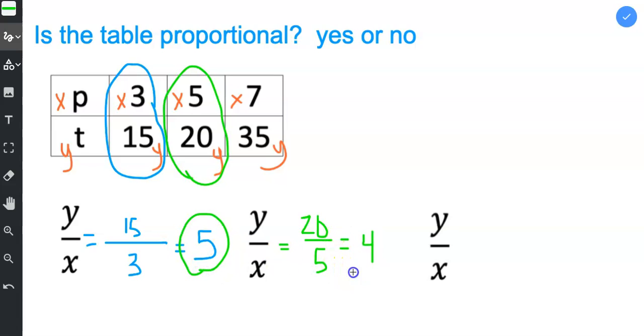Since these unit rates are different, I don't even have to look at the last point. If you even have one unit rate that's different, you know that it's not proportional. For it to be proportional, the unit rate has to be the same throughout the entire table. So it's not proportional.